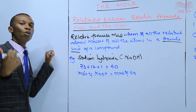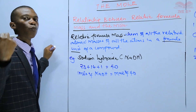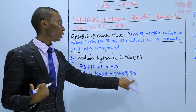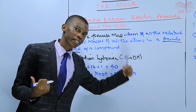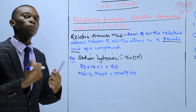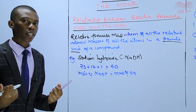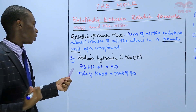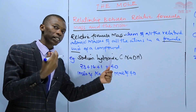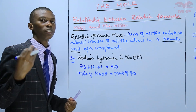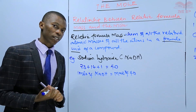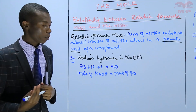If it's about 2 moles, then 2 moles of sodium hydroxide will be 40 times 2, which is 80 grams. If it is 1.5 moles of sodium hydroxide, then it will be 40 times 1.5, which gives you 60 grams. That is one example.